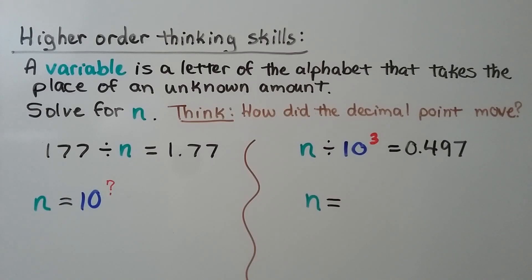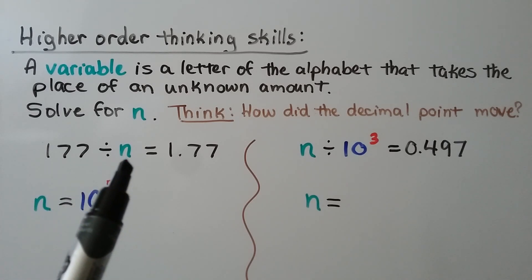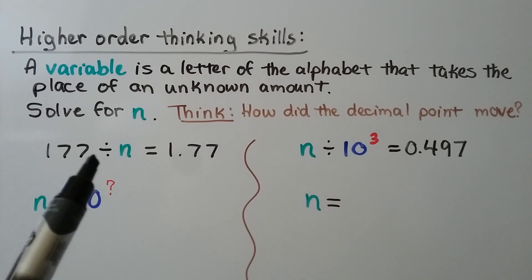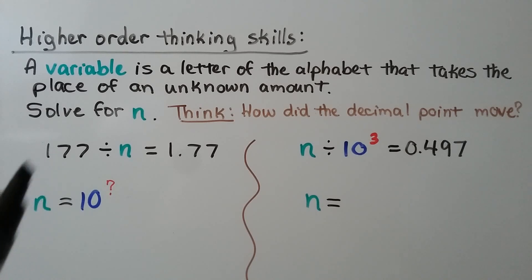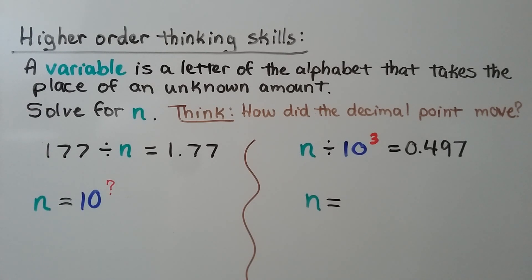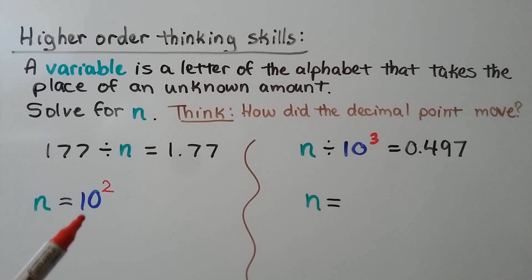Now let's try some higher order thinking skills. Remember, a variable is a letter of the alphabet that takes the place of an unknown amount — we need to solve for n. We have 177 divided by n equals 1 and 77 hundredths. Since 177 is a whole number, the decimal was originally on the right, and it moved two hops to the left. If n is a power of 10 and it moved two hops to the left, the exponent should be 2 — so n equals 10 to the second power.